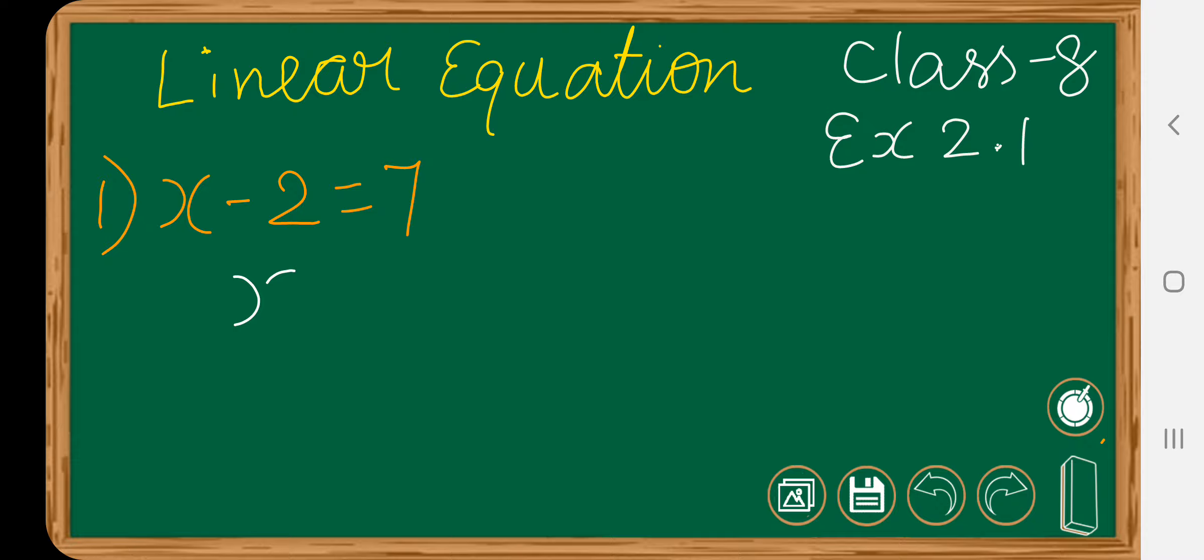Today we are going to discuss Class 8 Exercise number 2.1 linear equation. The first question is x minus 2 equals to 7. Now we want to find the value of x, so this minus 2 will go to opposite side means it will become plus 2.